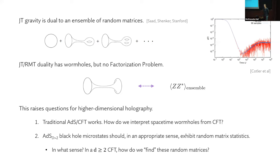The second question is that black hole microstates in any dimension, not just AdS2 physics, should in an appropriate sense exhibit random matrix statistics. But in what sense, and from the CFT point of view in more than one dimension, how do we find these random matrices?